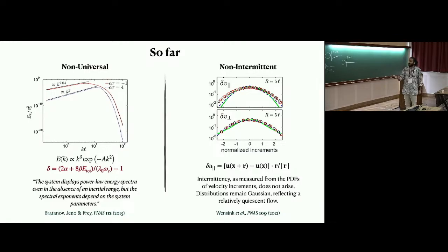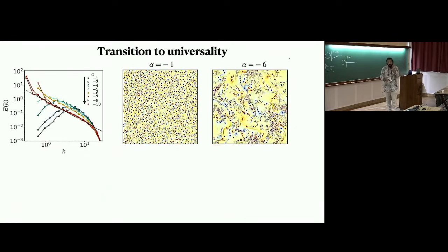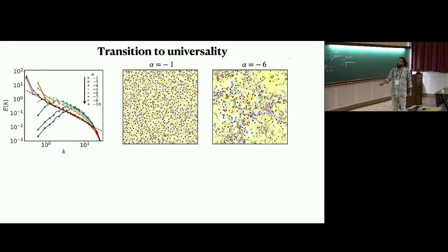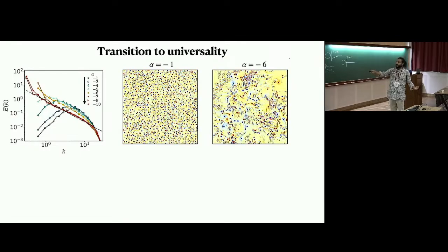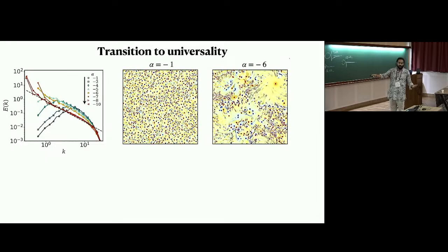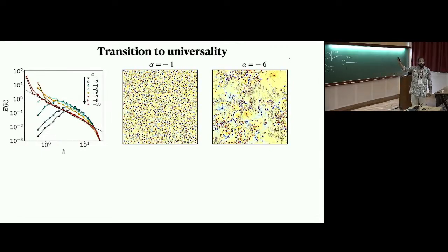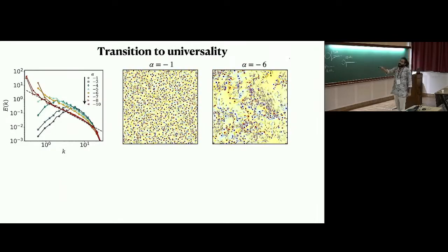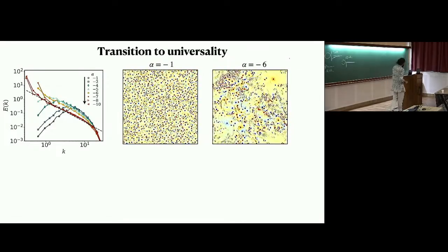What we found is that the scaling of the energy spectrum is non-universal — you have K raised to the power delta where delta is a function of activity. Looking at the energy spectrum for different levels of activity: at mild activity (alpha = -1) you have one vortex scale where the spectrum peaks and then falls off. As you change alpha, this slope becomes shallower and shallower, and at some point it even flips sign, showing large-scale organization, with all scales being energized.